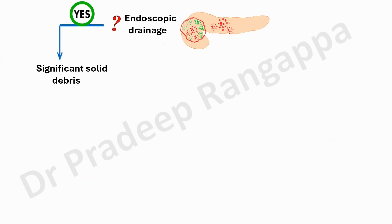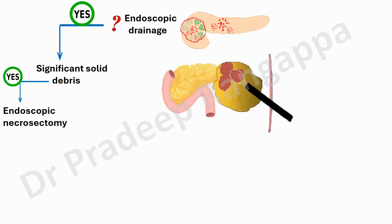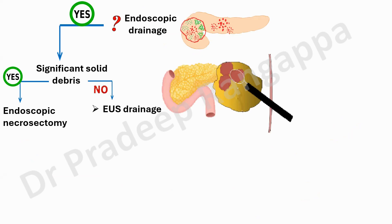If endoscopic drainage is possible, one needs to ascertain with radiology teams whether significant solid debris is present. If yes, the recommendation is to perform endoscopic necrosectomy. These are technical terms which GI teams are very familiar with — it's important for intensivists to at least know what they tend to do. Endoscopic necrosectomy is what is suggested in that scenario.